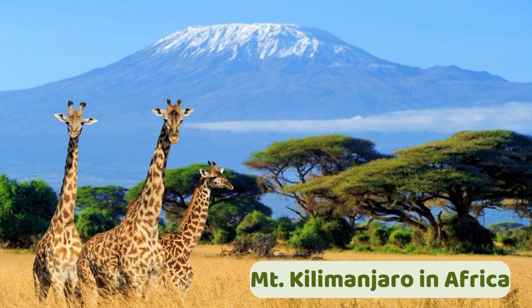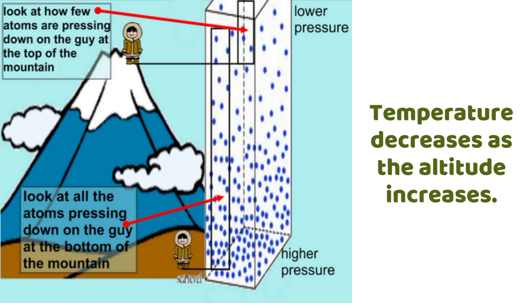Another example is Mount Kilimanjaro, located in Africa. Africa is a place near the equator, so we expect high temperatures. However, how is it possible that the peak of this mountain is covered by ice? That is because of altitude — the mountain stands 5,895 meters above sea level. The higher the place, the colder the temperature; temperature decreases as altitude increases.